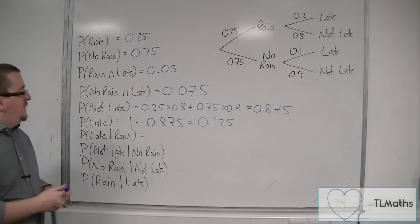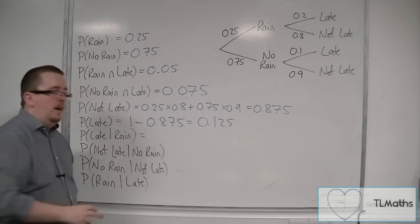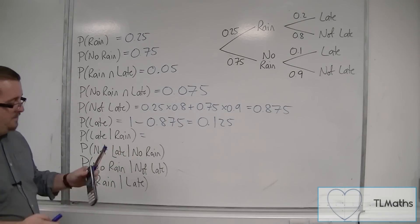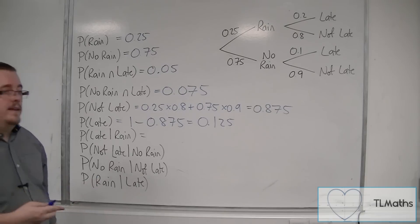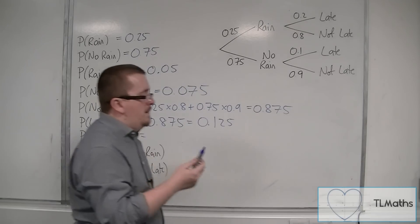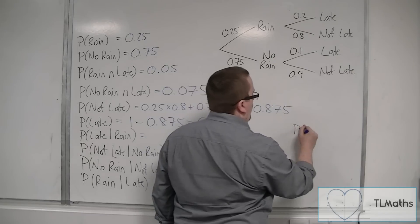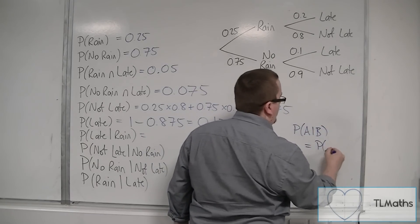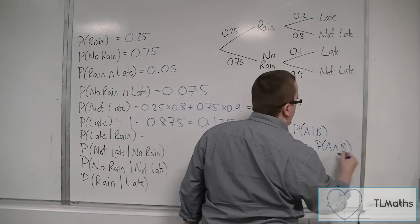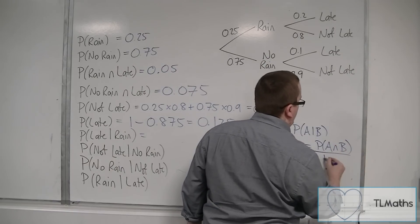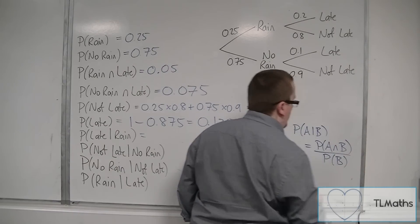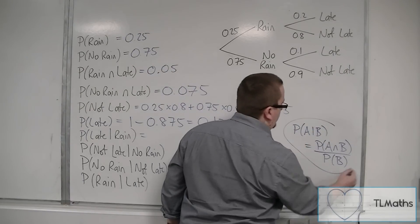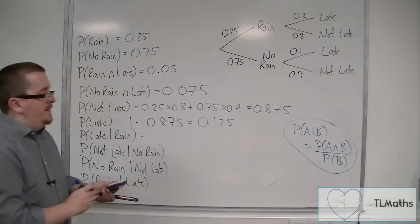Now we start to get into the more interesting region of questions — these conditional probabilities. They all stem back to remembering that the probability of A given B is equal to the probability of A intersection B divided by the probability of B. That is the formula we need to use to make sure we're getting this right.